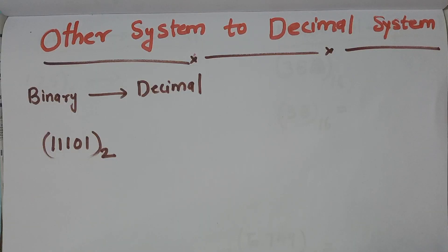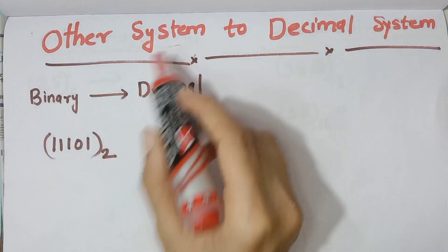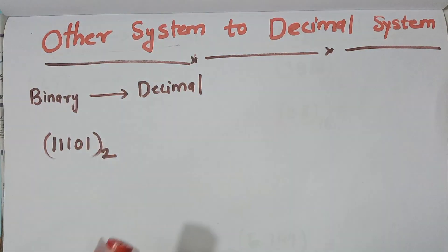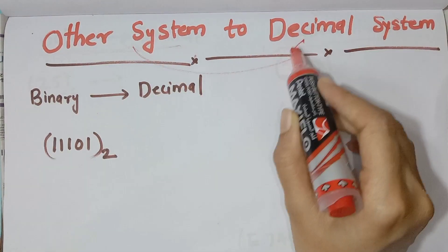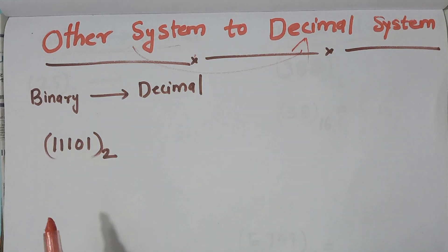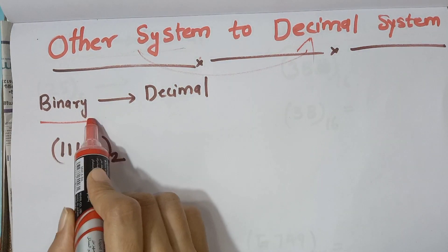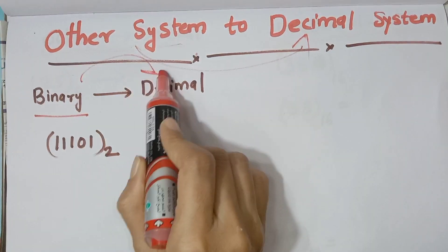Other number systems to the decimal system. What is binary, octal, hexadecimal? We will convert them into decimal. We have already made a decimal conversion video. In this case, we will discuss binary numbers and convert them to decimal.